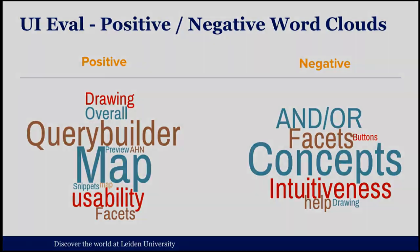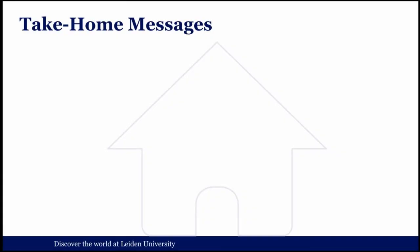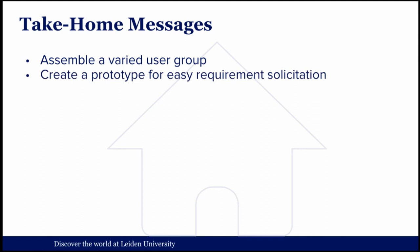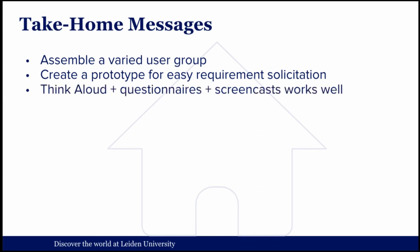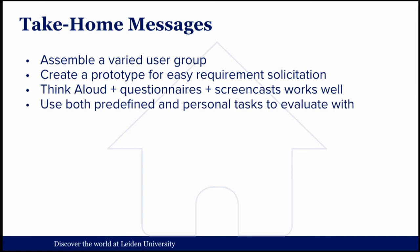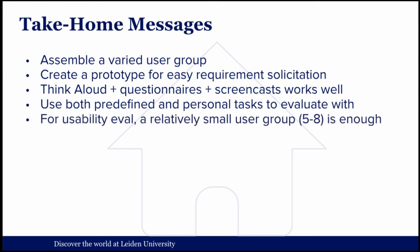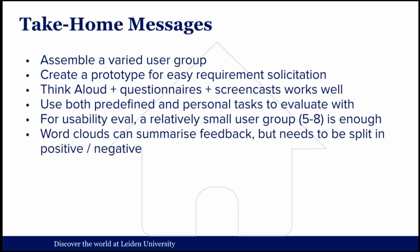The take-home messages: it's very important to assemble a varied user group and make sure you have a good sample of the people who will use your system. If you want easy requirements elicitation, build a prototype — it makes everything a lot easier. Using the think-aloud method plus a questionnaire and screencasts works well for recording these types of studies. Use both predefined and personal tasks to evaluate, because during personal tasks we found a lot more issues and users started using the system much more freely. For usability evaluation, a relatively small user group of five to eight people is generally enough. And word clouds can summarize feedback, but you do need to split them into positive and negative statements.